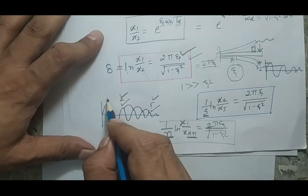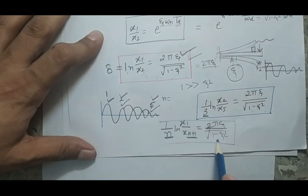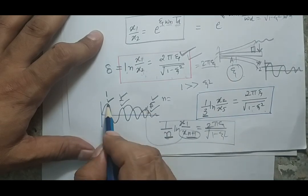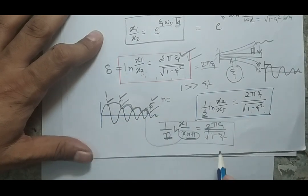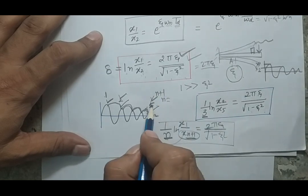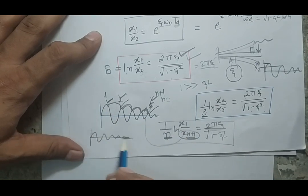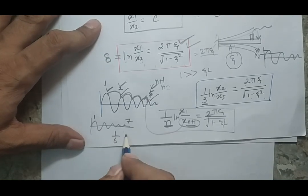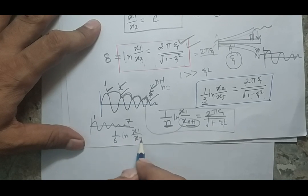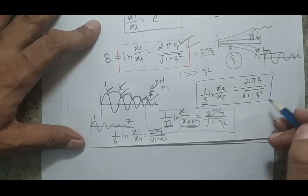For example, if you take the ratio of the first peak and the fifth peak, then n+1 = 5, so n = 4. If you take the first and seventh peaks, the formula becomes: (1/6) · ln(x1/x7) = 2πζ / √(1 − ζ²). Please remember these two formulas: one for successive peaks, and one for non-successive peaks where you divide by n, the number of cycles between the two chosen peaks.